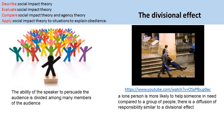Latane also suggests divisional effects — the idea that talking to smaller groups rather than one large group is more effective. The ability of a speaker to persuade an audience is divided among its members. For example, a teacher speaking to 30 students about obedience and behaviour will have less effect than keeping one pupil behind after class and speaking to them individually, removing the influence of their peers.